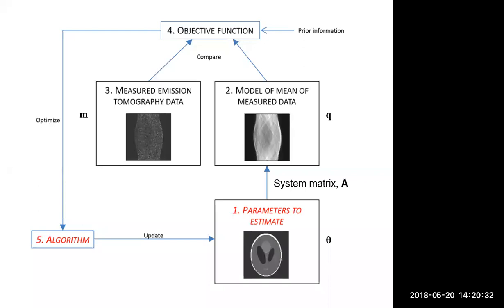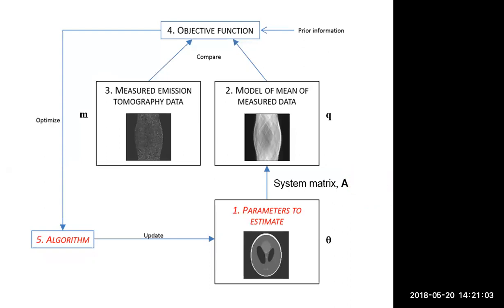For this first half-hour, we're looking at the model of the data q given a current estimate of parameters theta. The current estimate of theta corresponds to a radiotracer distribution — exactly what we're trying to find in reconstruction. So we're doing the forward model, the system model, whose core part is line integrals — though in PET we need to be a bit more involved than just line integrals, but it's the core of the model frequently used.